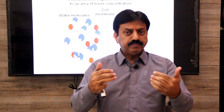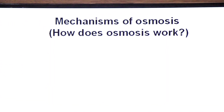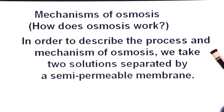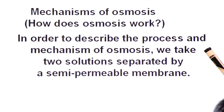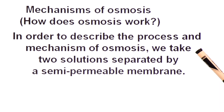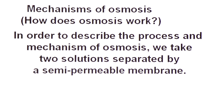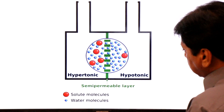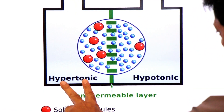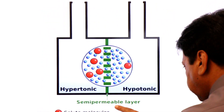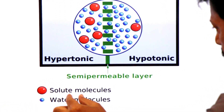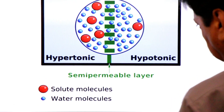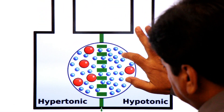The mechanism of osmosis: to describe the process, we take two solutions separated by a semi-permeable membrane. We have a hypotonic solution and a hypertonic solution on either side of the semi-permeable membrane. The red dots represent solute concentration and the blue dots represent water molecules.